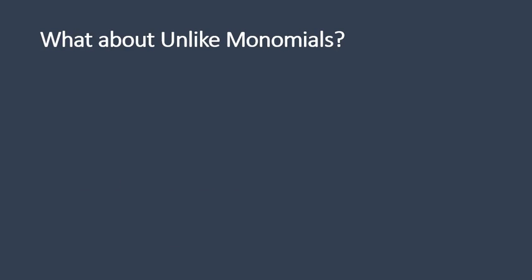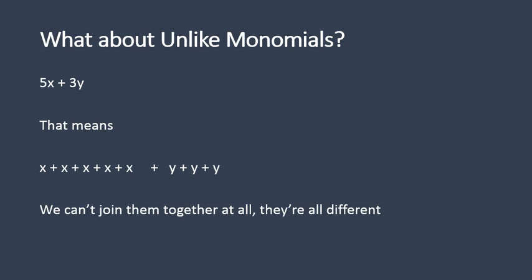When you have unlike monomials, it looks like this. Let's say we have 5x plus 3y. Let's break this down. That means x plus x plus x plus x plus x — five x's — plus y plus y plus y — three y's. You can't join these together because they're completely different. So we can't just add those numbers; there's no way to join them together. Because they are completely different, it's actually going to stay as a binomial — 5x plus 3y. That's as simplified as you can get. They're totally separate and they need to be kept separate from each other.